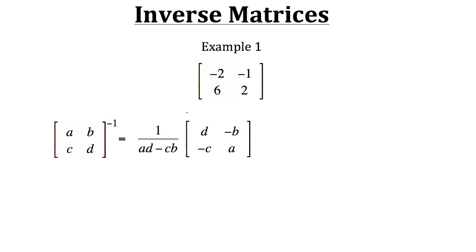Let's take this formula and apply it to our matrix from Example 1. We'll put in the values for a, b, c, and d: negative 2, negative 1, 6, and 2. The first thing we want to do is find the determinant for our matrix.